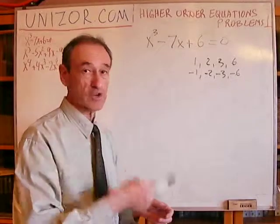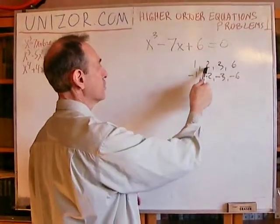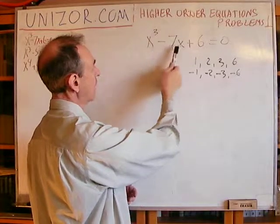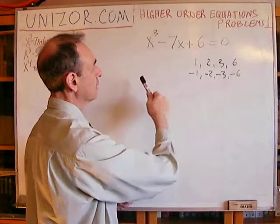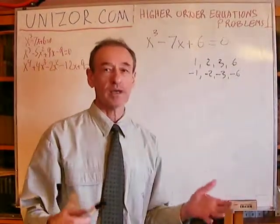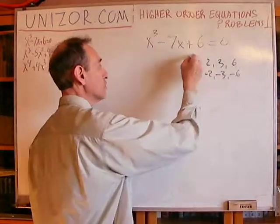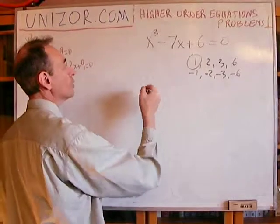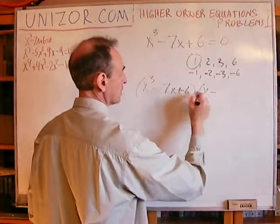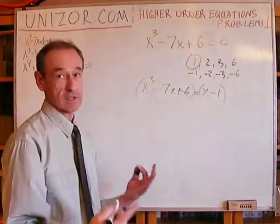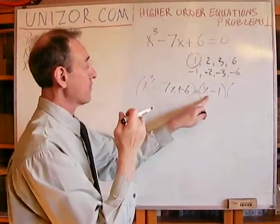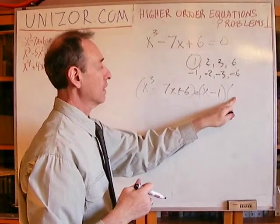We can basically go and sequentially check: 1 — works; 2 — works; 3 would not work; 6 obviously will not either; minus 1 will not fit; minus 2 will not; minus 3 will fit; and minus 6 will not. That's how we can find all three solutions. On the other hand, if we have found that x=1 is a root, you know that you can always represent the equation as a product: x minus 1 times some polynomial of the second degree, because this is the third degree and this is the first degree, so the remaining factor must be second degree.